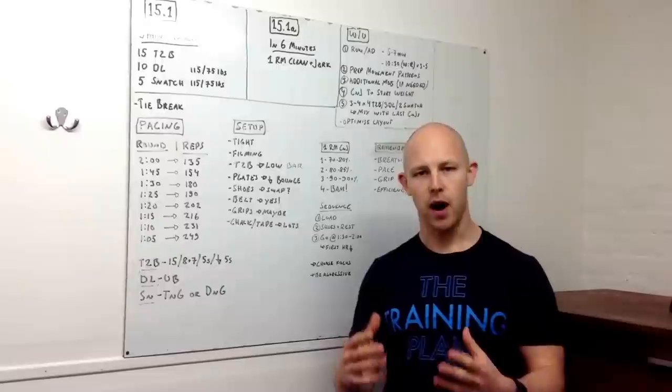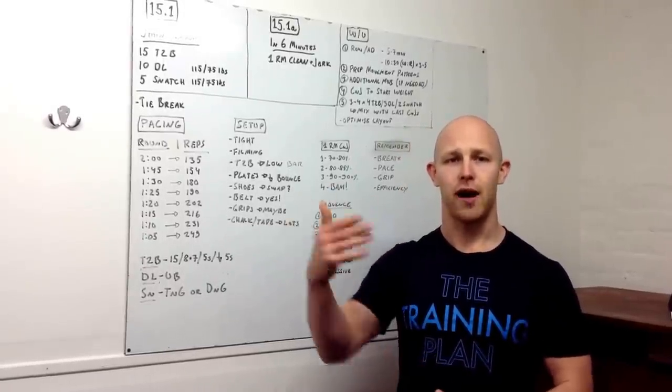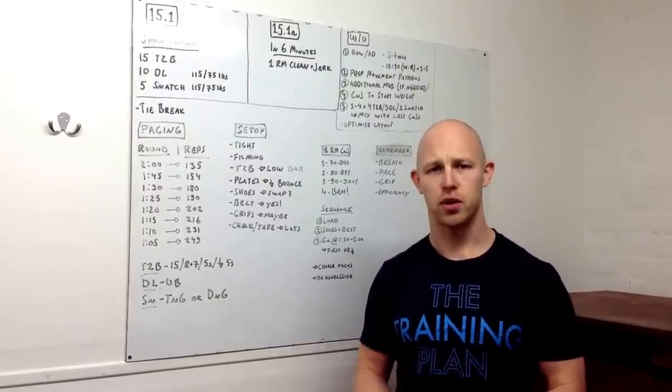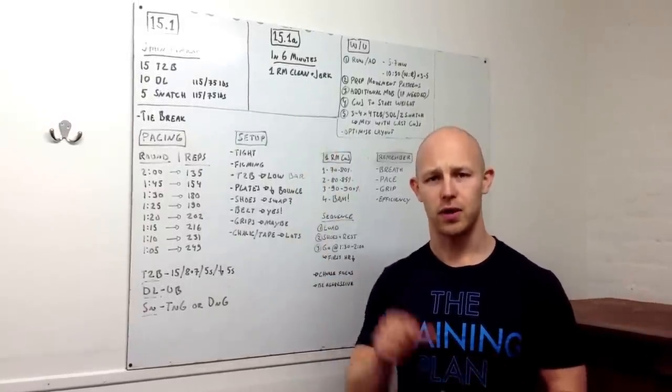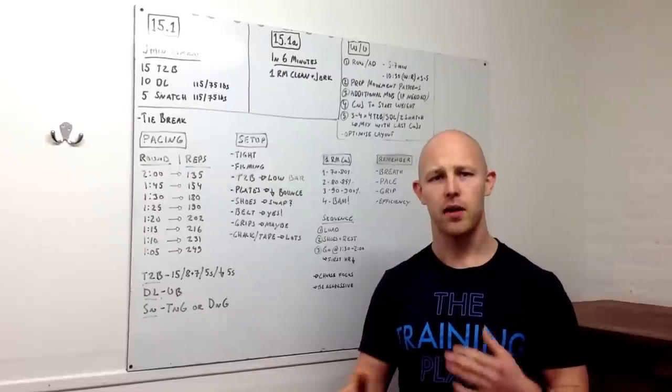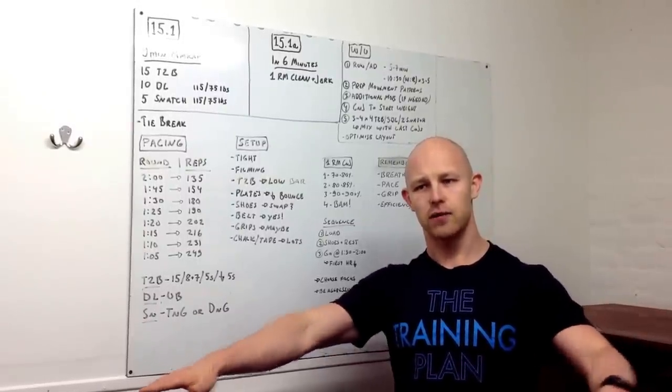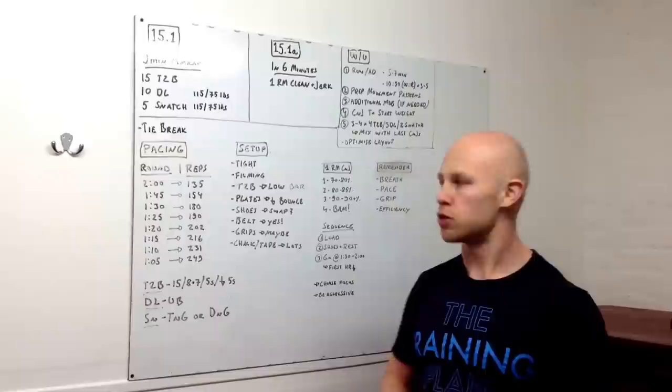Now, for the toes-to-bar in this one, in the 15.1, we want you to set up a low bar so that you don't have to jump up. You're going to lose a lot of efficiency jumping up. It's going to fatigue you and you're going to lose some time. So, if you can go on your tiptoes, reach for the bar, that's great. If you need a little hop, that might be okay. Otherwise, stack some plates or some boxes, stand on either side of them and do the toes-to-bar in between. That would be a nice, safe way to do it.